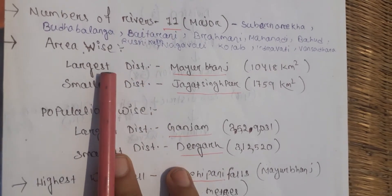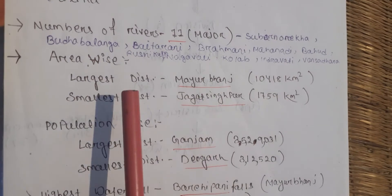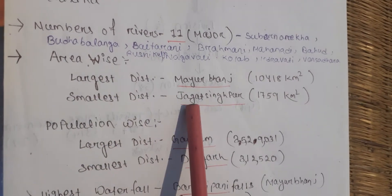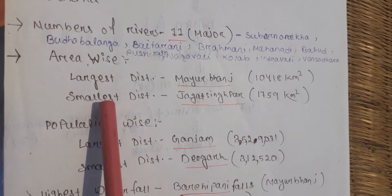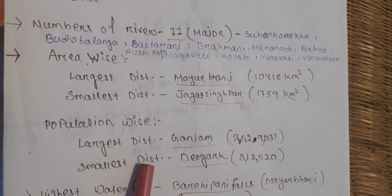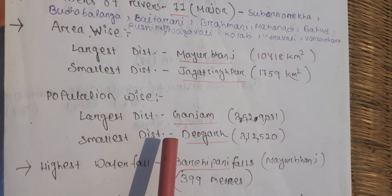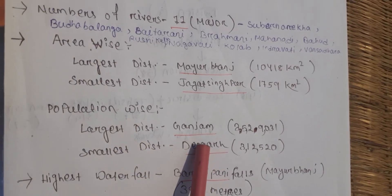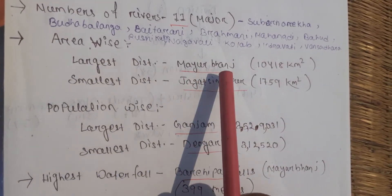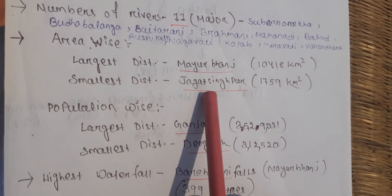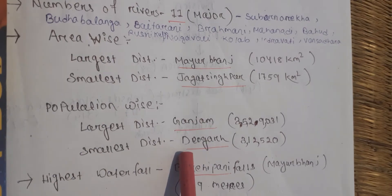Area-wise, the largest district of Odisha is Mayurbhanj and the smallest district is Jagatsinghpur. Population-wise, the largest district is Ganjam and the smallest district is Deogarh.